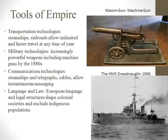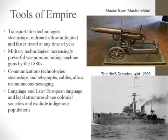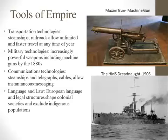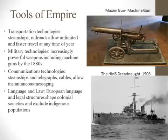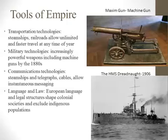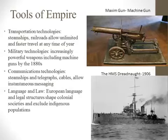Communications technologies — steamships, telegraphs, and trans-oceanic cables like the one laid from North America to Europe in the 1890s — allowed for more instantaneous communications and thus more direct control over far-flung empires. Europeans also used language and legal structures to shape colonial societies, undermining indigenous populations. This connects to the genocide question: does eliminating a culture's language or legal structure also amount to a form of genocide?